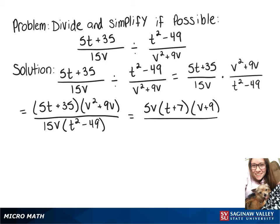On the bottom, I'm going to rewrite that 15v as 5v times 3, and then we have a difference of squares, which we'll factor into t plus 7 times t minus 7.